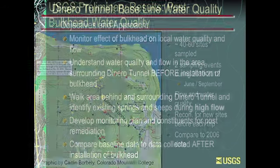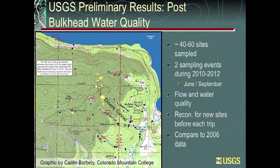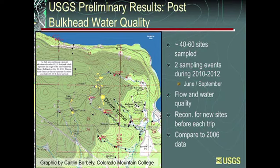This is the area just south of Turquoise Lake — this is the Sugarloaf Mining District; Denaro Tunnel is right here. You can see our sampling sites on the next map. We sampled between 40 and 60 sites; we've had two sampling events every year from 2010 to 2012, and our last two are coming up. We do those events during high and low flow to bracket the conditions. We look at both flow coming out of every feature and the water quality. Students at Colorado Mountain College are working with us and they do a lot of hiking on that mountain before we go out to sample, using GPS units to locate new features. Ultimately we'll compare all the 2010 to 2012 data with the 2006 baseline data.